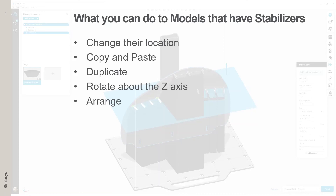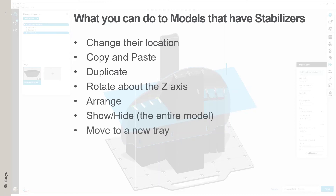Here are the things you can do to models that have stabilizers: you can change their location, copy and paste them, duplicate them, rotate them about the Z axis, and when you have more than one on a tray, you can arrange them. You can also show or hide them, but only the entire model, and you can move them to a new tray.